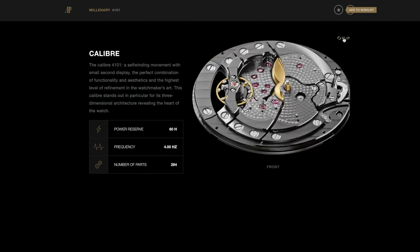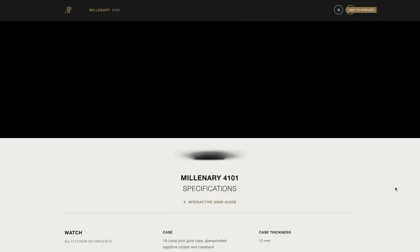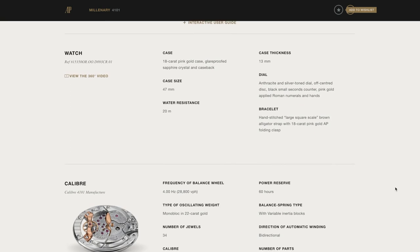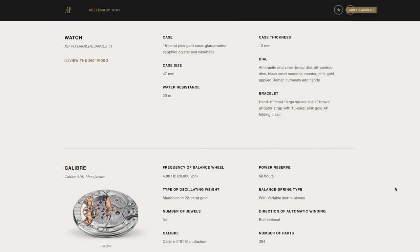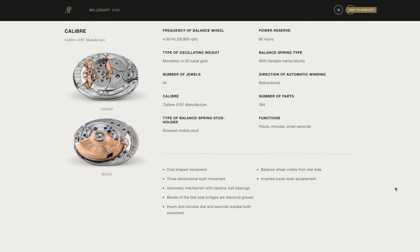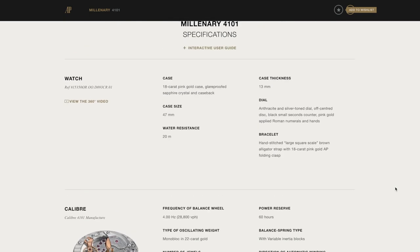This is me going through the website on the 4101 Millenary. You can take a look at the specs. Just an amazing watch. It has this distinctive oval dial and offset, you can see it right there, the rotor for the auto wind mechanism.